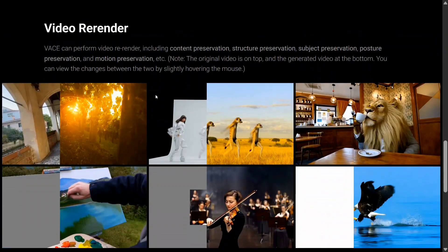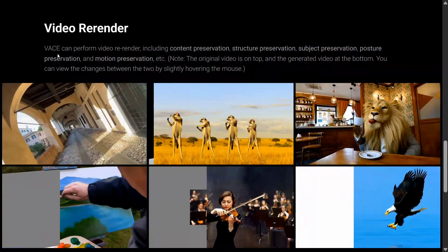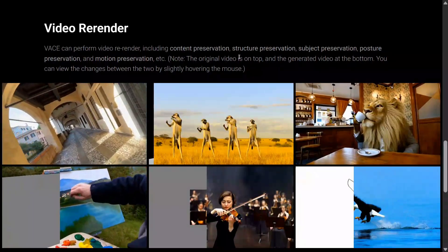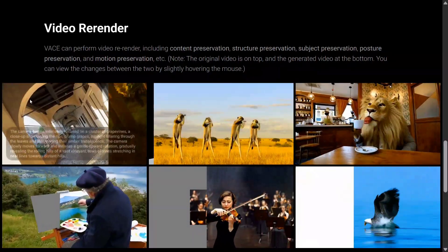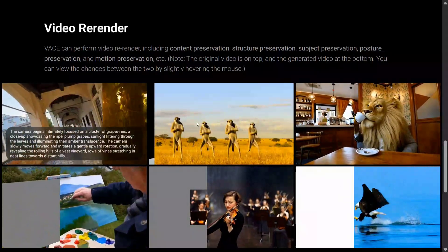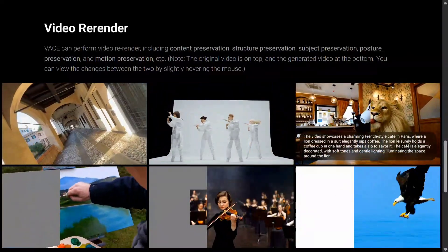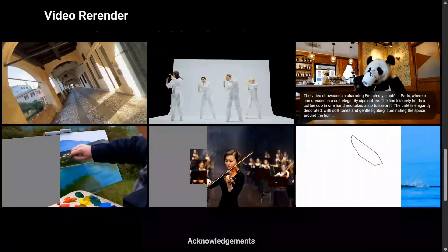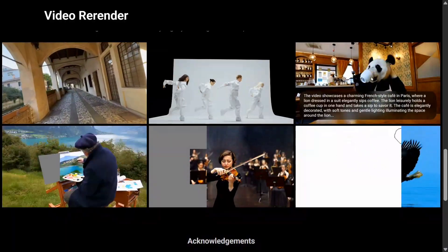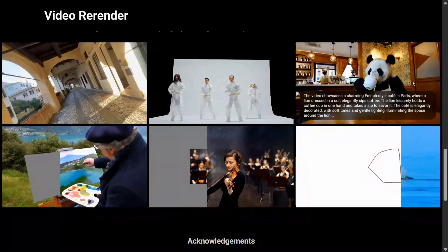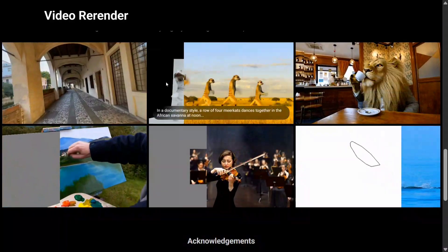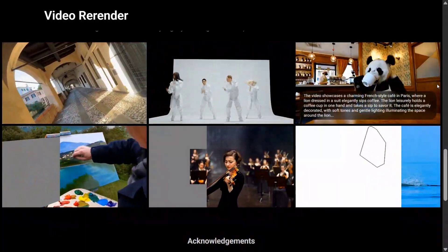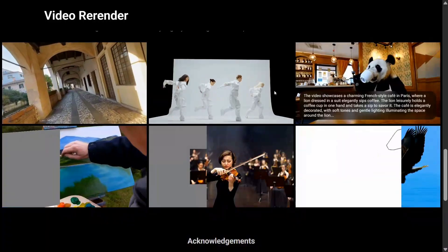Here are certain results they have given. Waise can perform video re-rendering including content preservation, structure preservation, subject preservation, and posture preservation. As you can see in this particular example, they just change the panda with the tiger. If you follow my cursor, everything remains the same but the transition happens.